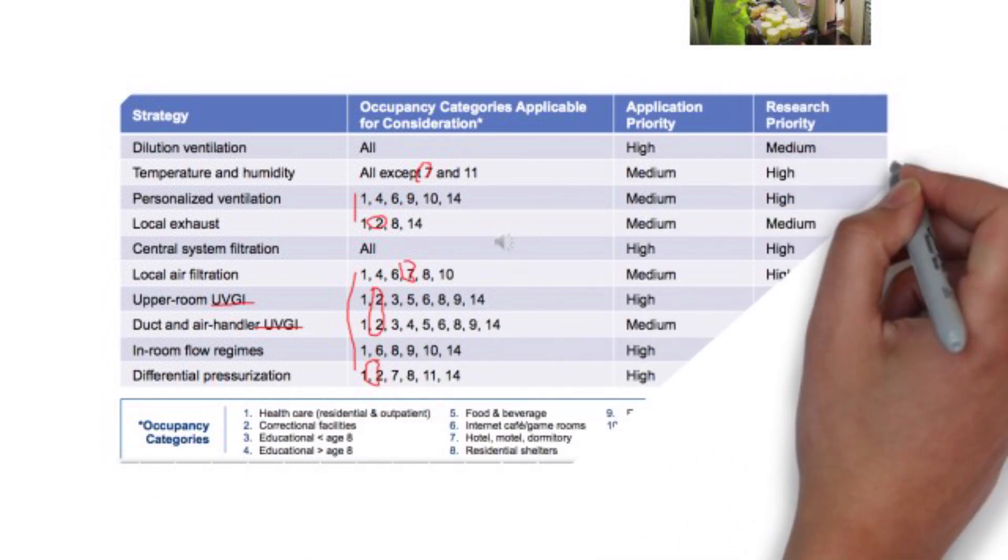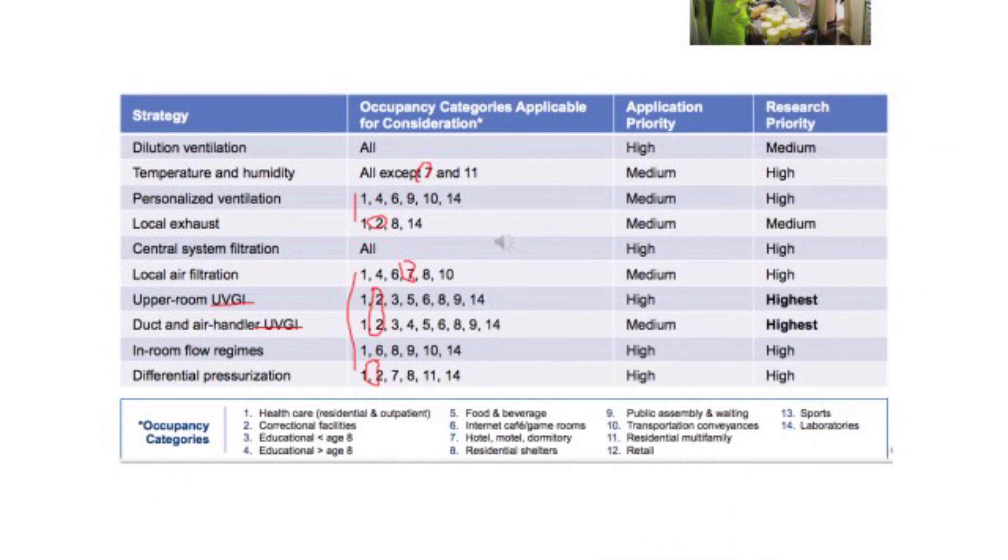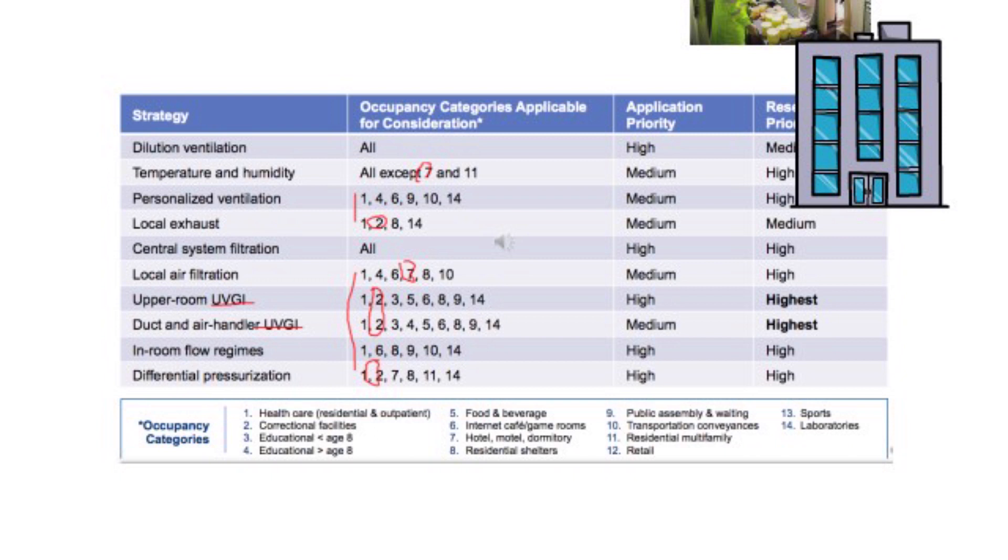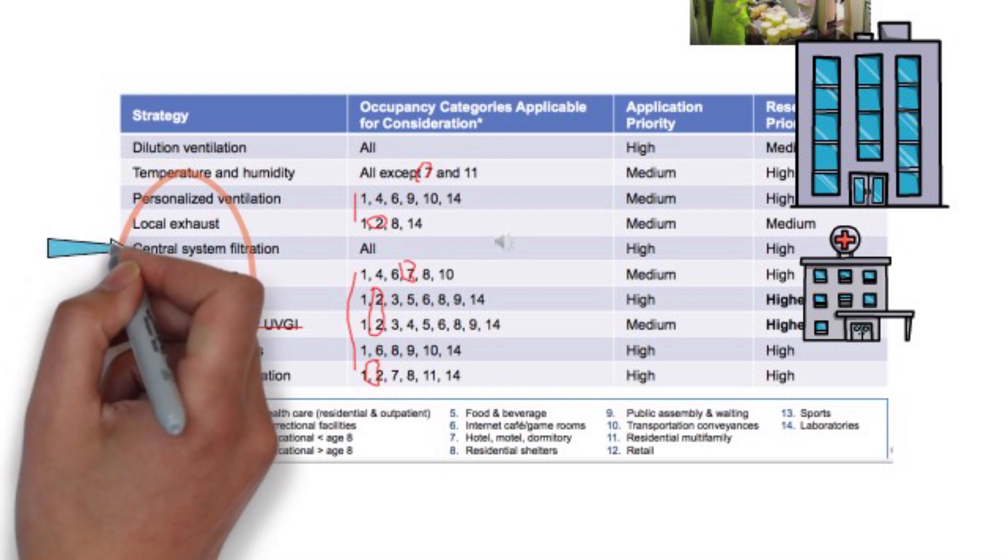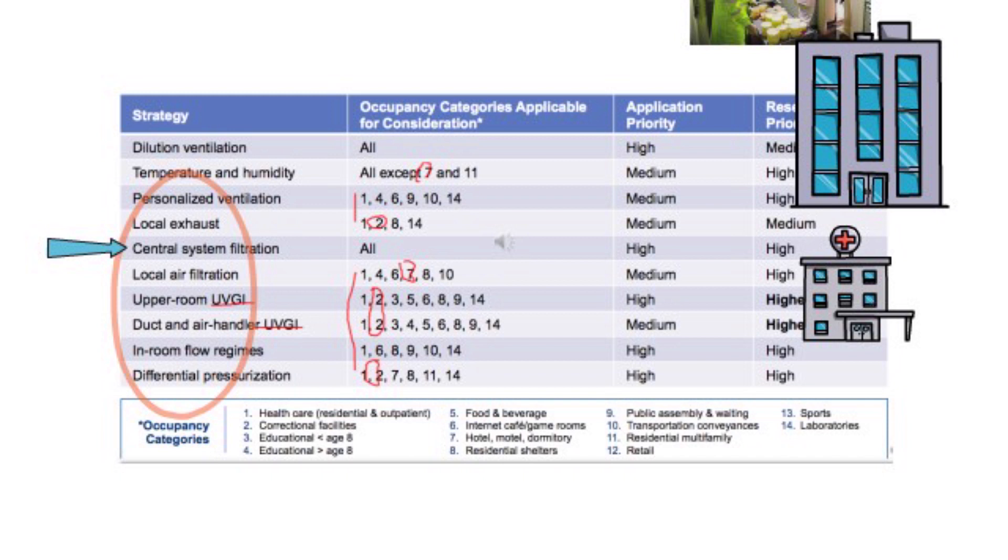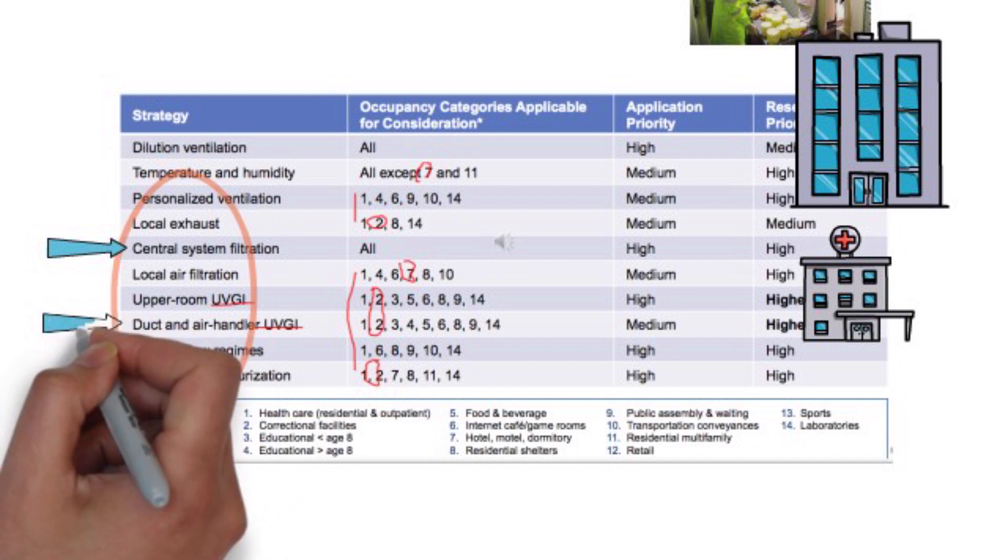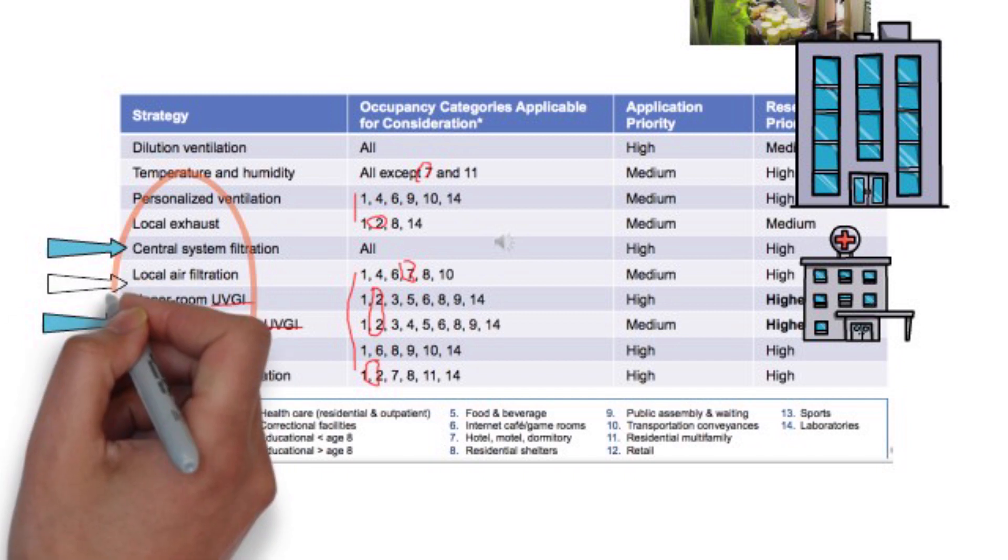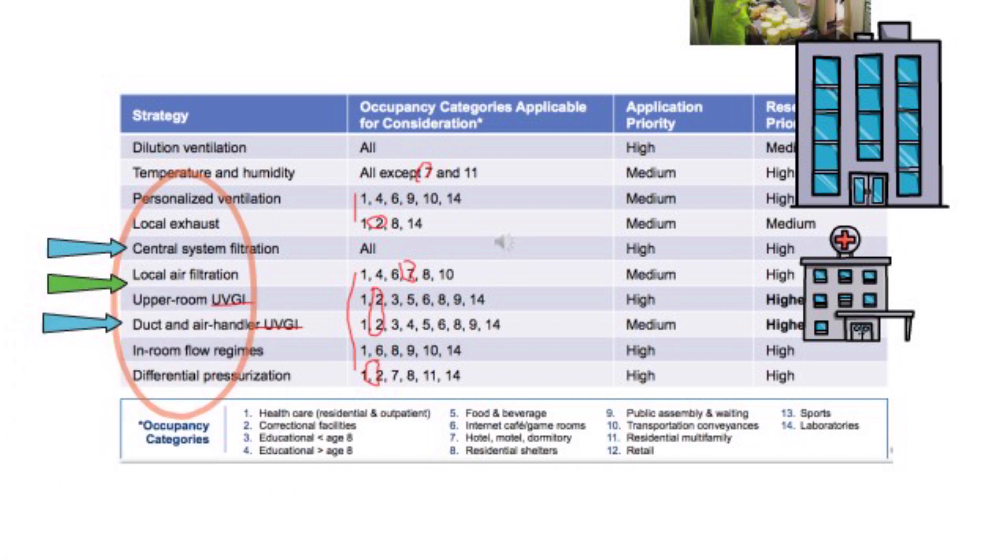This table from the ASHRAE document is very useful. For each of the 14 building types, number one is health care facilities, number two is correction facilities, etc. What control strategies apply, and what are the application and research priorities? We can see that for health care facilities, all strategies apply. Dilution ventilation, temperature and humidity control, local exhaust. If possible, you can also use upper room UVGI and local air filtration to kill or filter viruses.